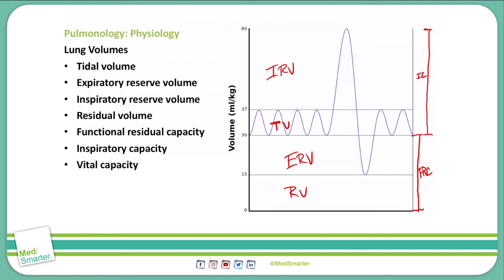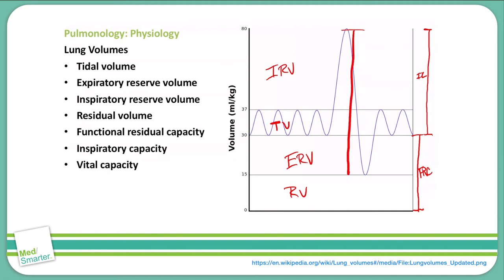The next capacity is the vital capacity, calculated by adding together the tidal volume, the inspiratory reserve volume, and the expiratory reserve volume. The vital capacity is the maximum amount of gas that can be expired during a maximal inspiration. We calculate this from the top of the inspiration curve to the very bottom of the expiration curve.